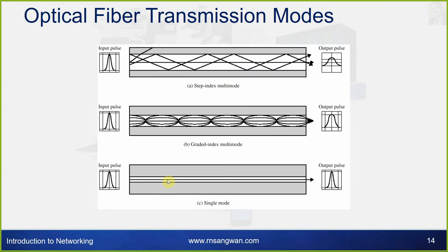Optical fiber transmission modes: step index — multiple rays are transmitted at different angles, producing pulse spreading between input and output. Graded index — also shows input and output pulse differences but with improved performance. Single mode — a single beam is transferred directly, with the same input and output pulse. These are the three different modes for optical fiber transmission.